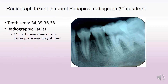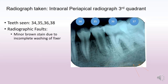Today we're looking at a radiograph taken for the third quadrant. The teeth that are seen are 34, 35, 36, and 37. I do not see any major faults, but we do see some minor brown stains which could be because of incomplete washing of the fixer. These stains can oxidize over time and remain permanently on dental films.